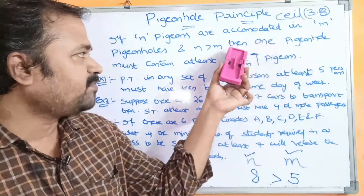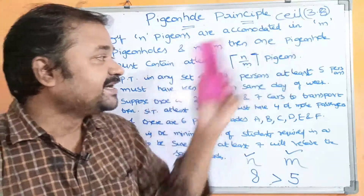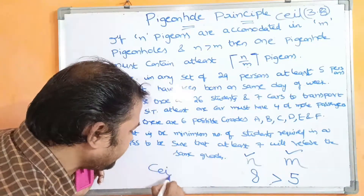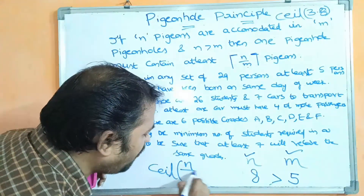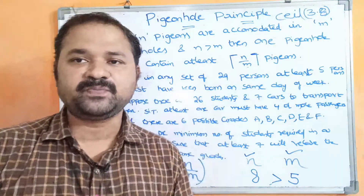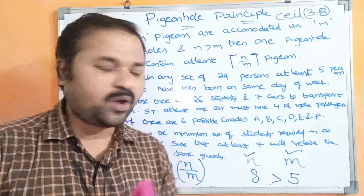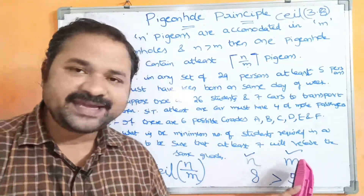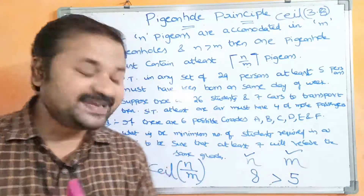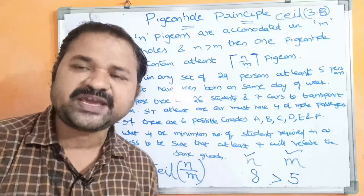So the result here is: one pigeonhole must contain at least ceiling of n by m pigeons. This is the Pigeonhole Principle — if we have n pigeons and m pigeonholes and n is greater than m, then at least one pigeonhole must contain ceiling of n by m pigeons.